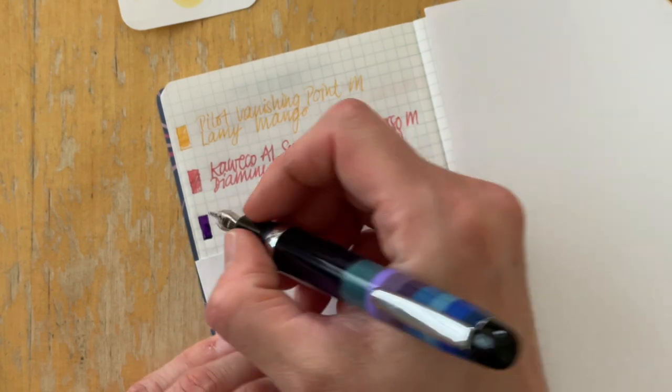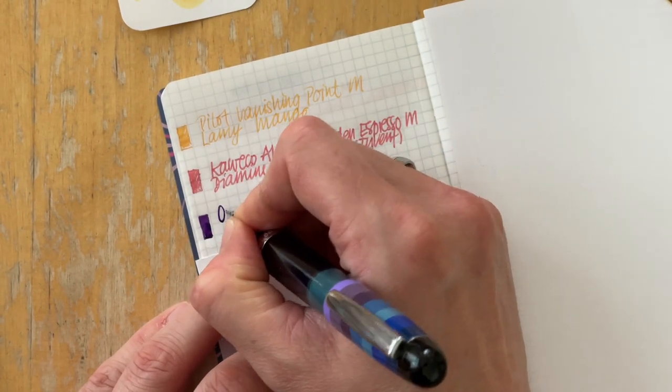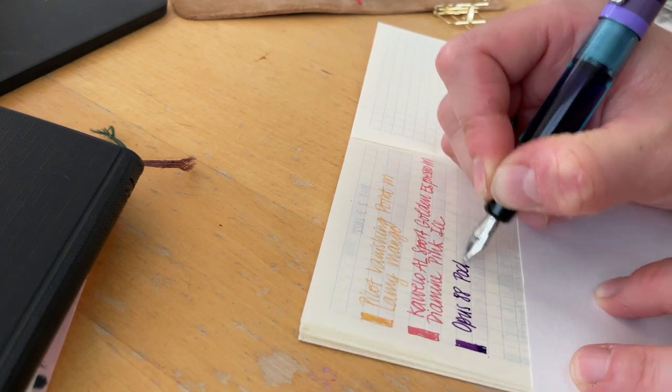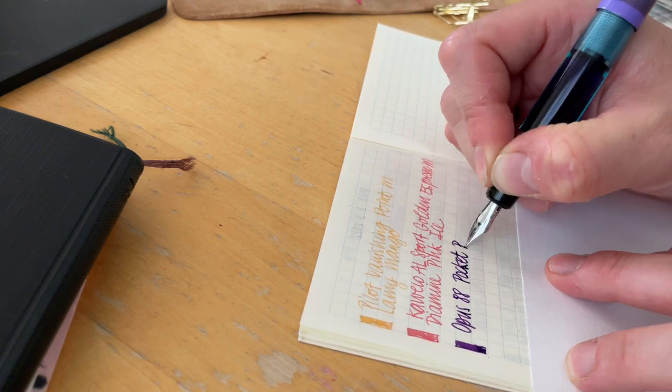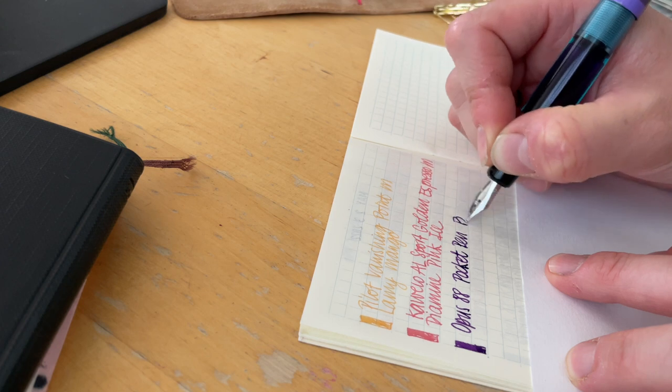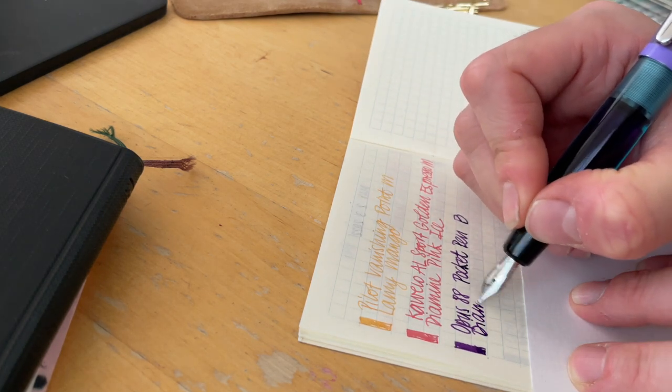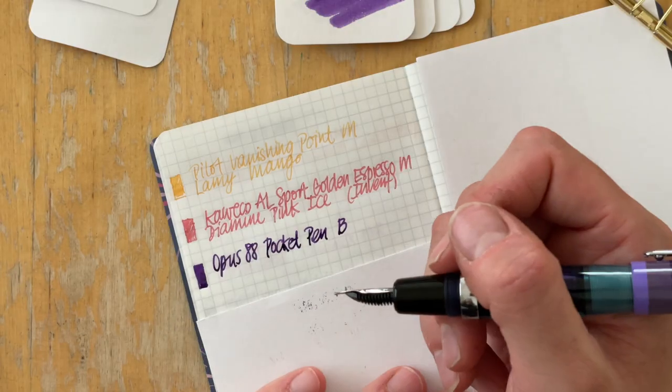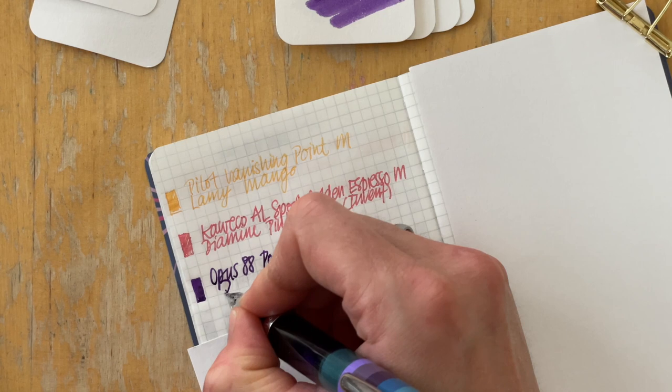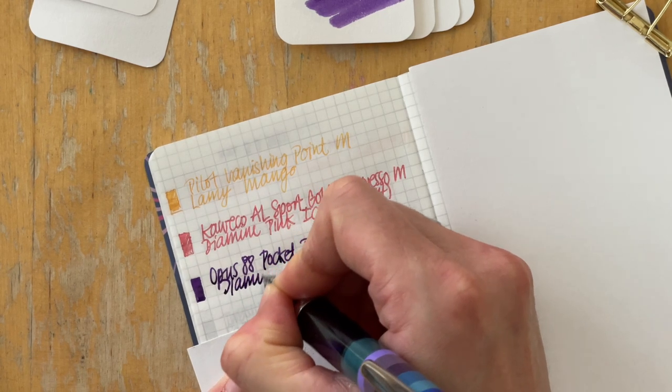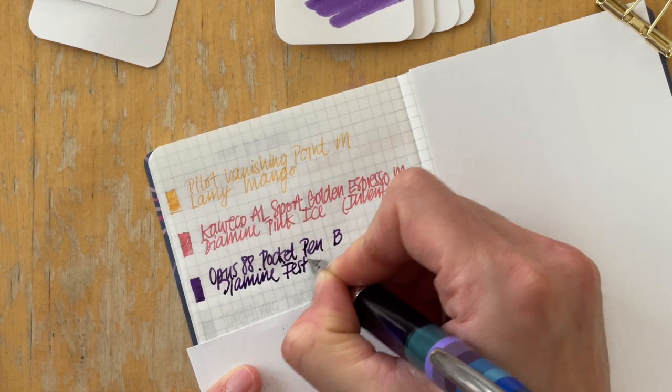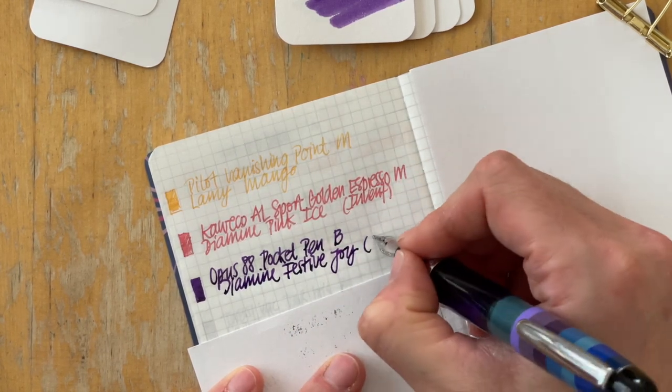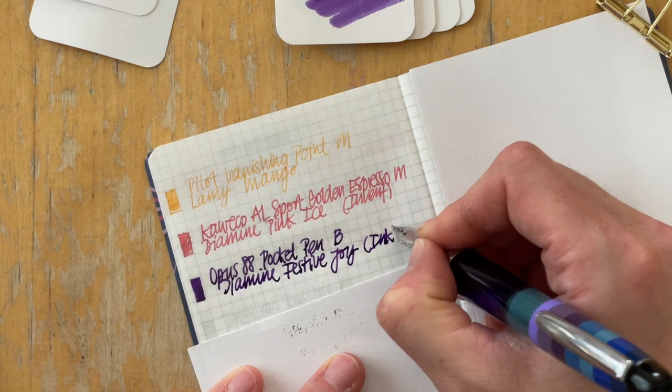This is the Opus 88 pocket pen. I think that's what it's called. It's a broad nib and the ink is Diamine Festive Joy. And that's also an Inkvent ink.